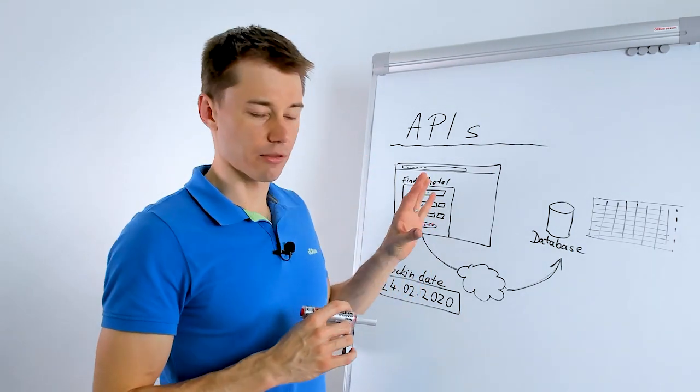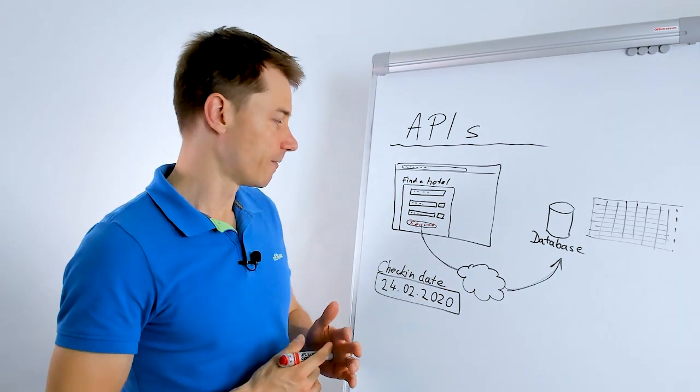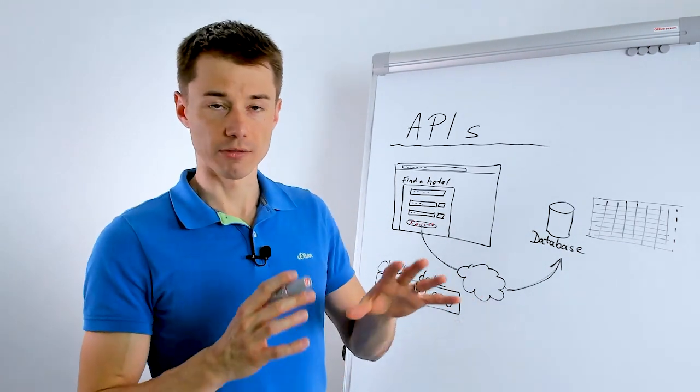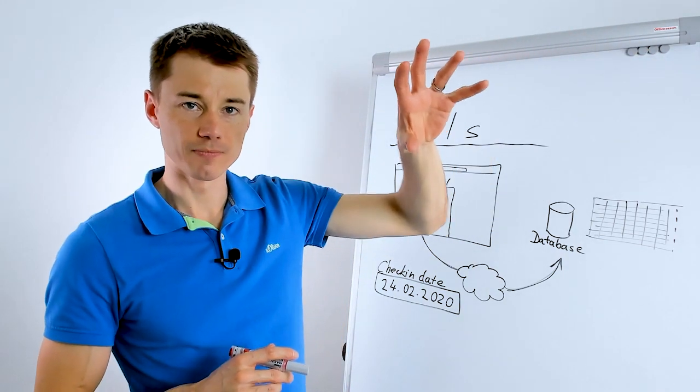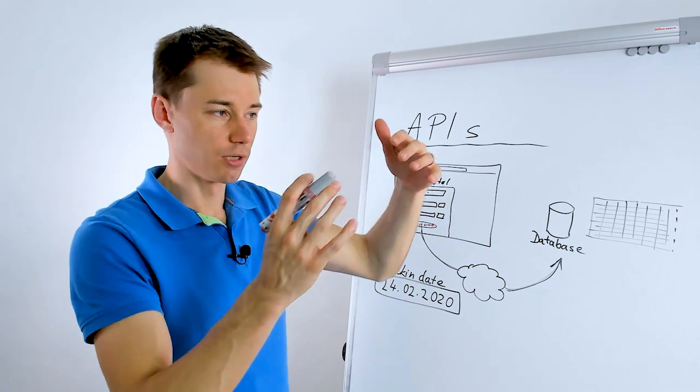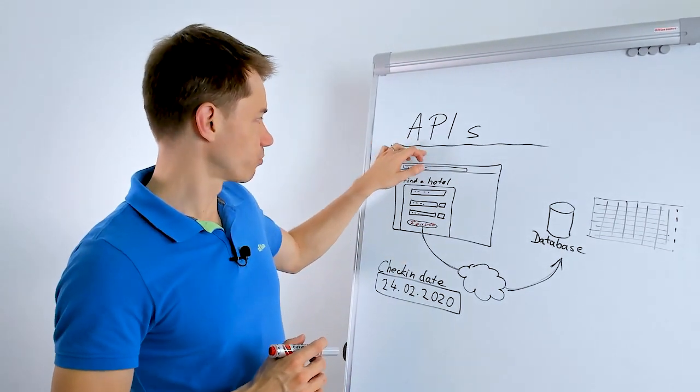As soon as you hit the submit button, then something is triggered. And usually it's an API that is triggered somewhere remotely, somewhere in the cloud. There is an API, an application programming interface. That's the API acronym, application programming interface.